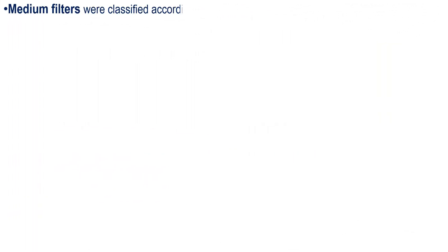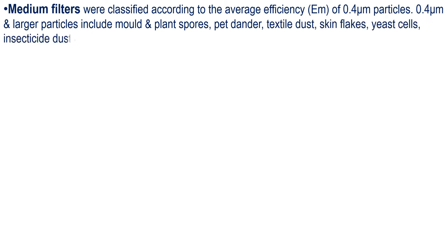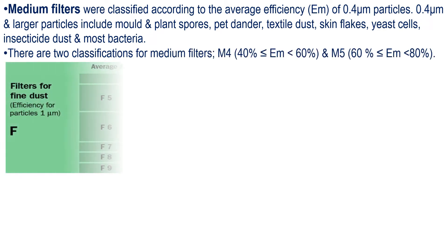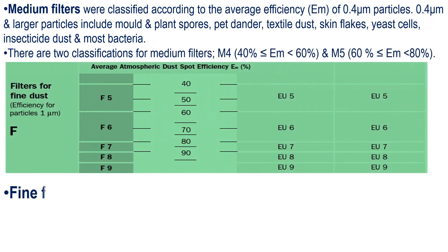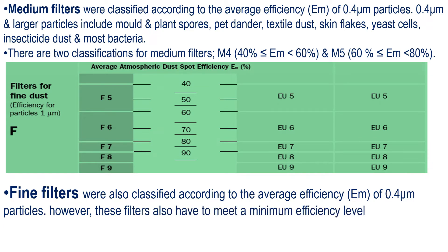M ratings — medium filters — were classified according to the average efficiency EM of 0.4 micron particles. Particles of 0.4 micron and larger include mold and plant spores, pet dander, textile dust, skin flakes, yeast cells, insecticide dust, and most bacteria. There are two classifications for medium filters: M4 — 40% ≤ EM < 60% — and M5 — 60% ≤ EM < 80%.